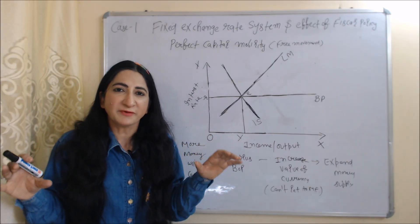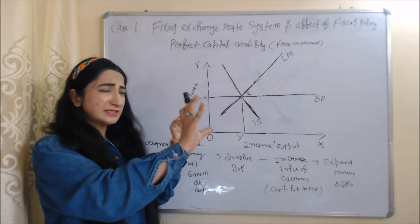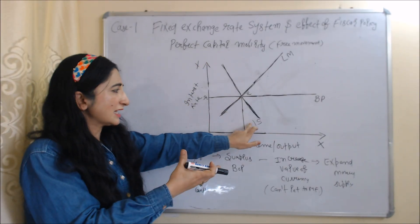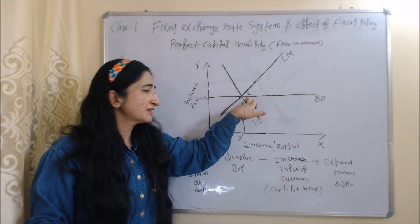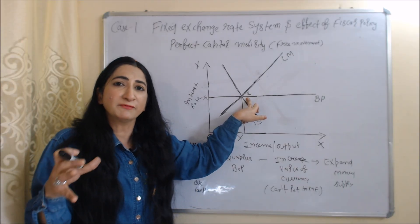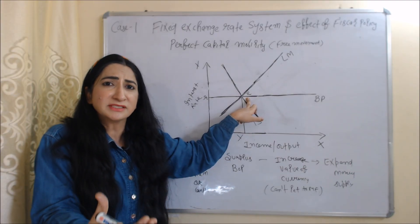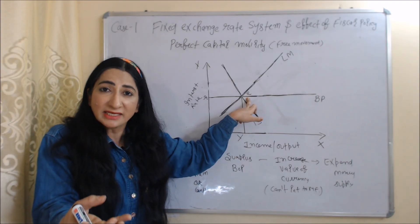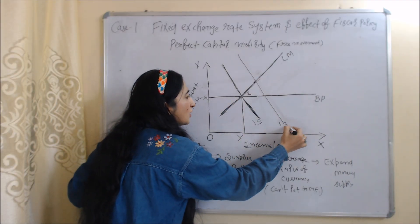Now we will see the effect of fiscal policy under the fixed exchange rate system. Everything is the same — we also assume perfect capital mobility. The diagram has the IS curve, LM curve, and the balance of payment line, with E as our initial equilibrium point. Under fiscal policy, the government increases expenditure, which influences investment, saving, and consumption, influencing goods market equilibrium. As a result, our IS curve will shift from IS to IS1.